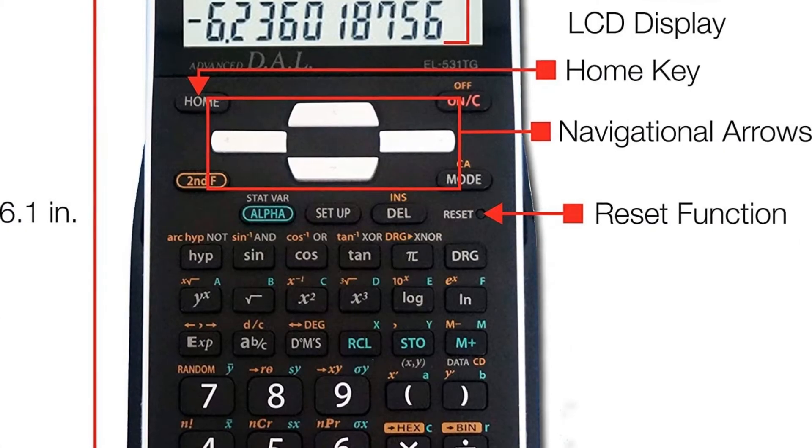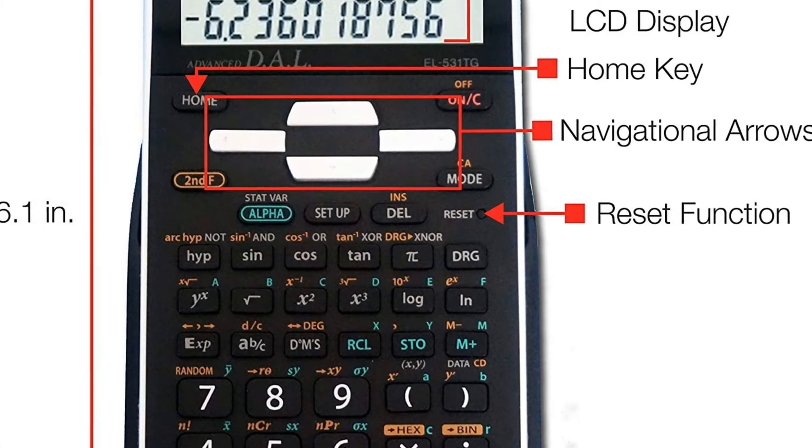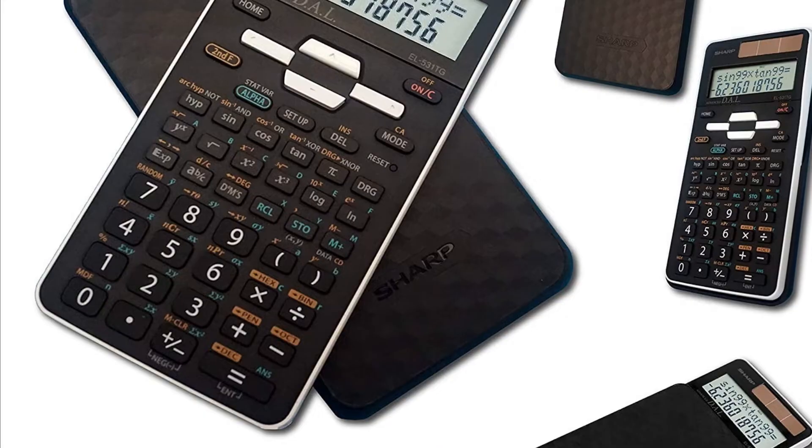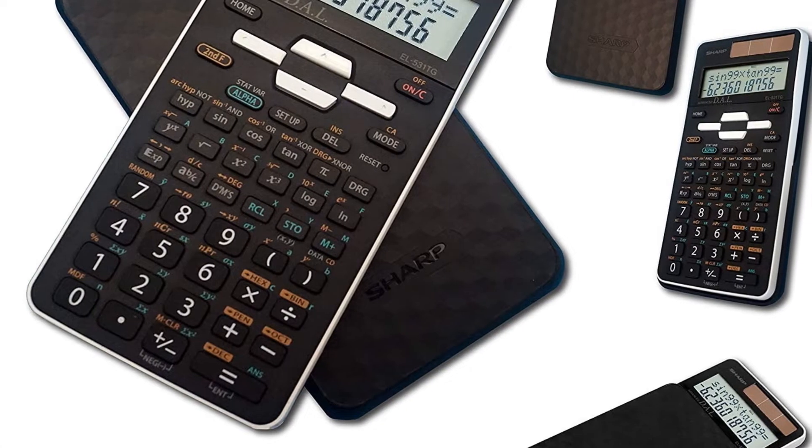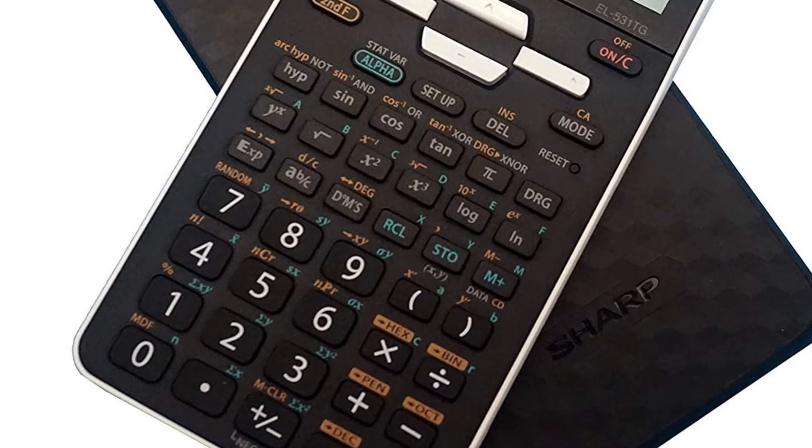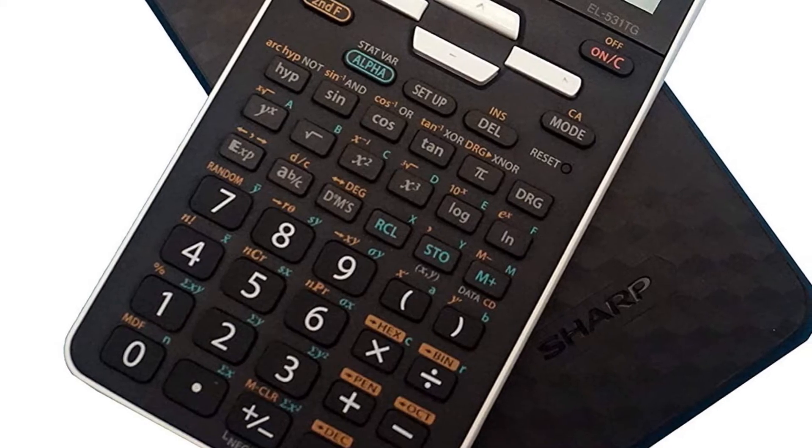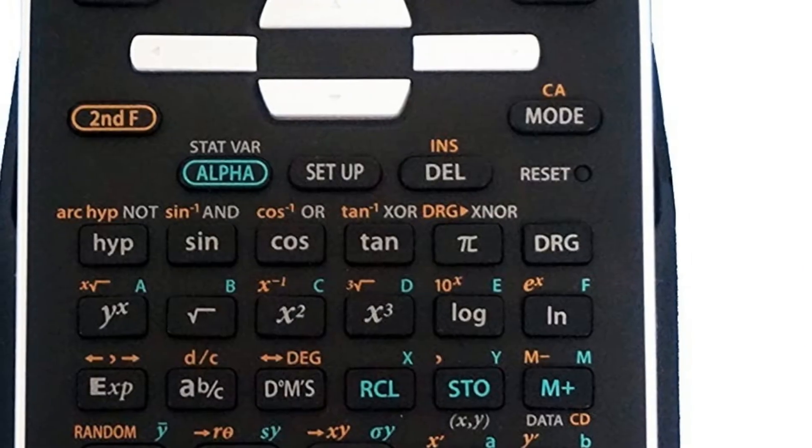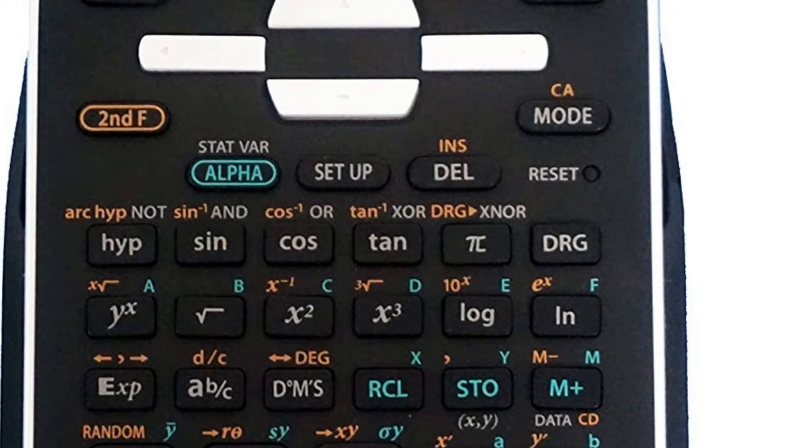The Home key allows users to start fresh from any screen. The EL531TGBBW has eight temporary memories, one independent memory, and one last answer memory. This calculator also allows equation editing and playback, one and two variable statistics, normal and stat modes, six regression types, and base calculations: hex, bin, dec, oct, pen.